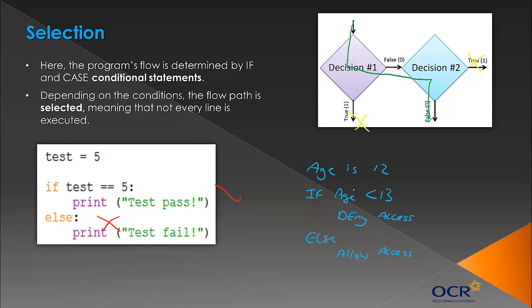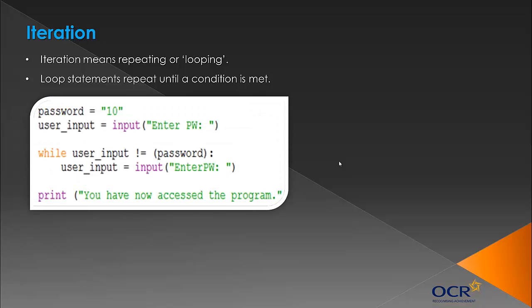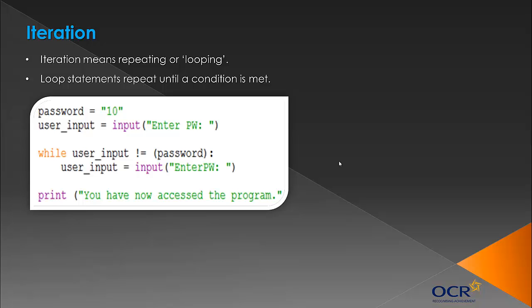The final building block is iteration, which just means repeating or looping. Loop statements repeat until the condition is met. There are two main types: while and for. A for loop runs a set number of times, while a while loop is more open — it could be infinite. Infinite loops are the worst thing for a programmer because they just crash the program.